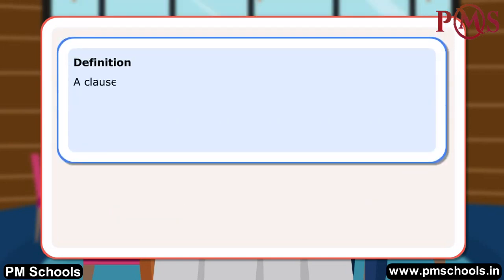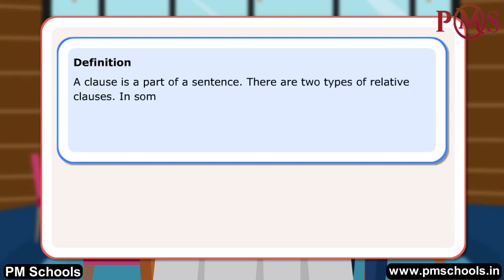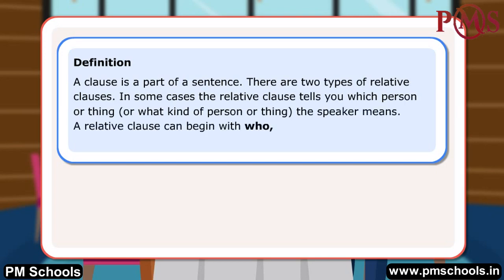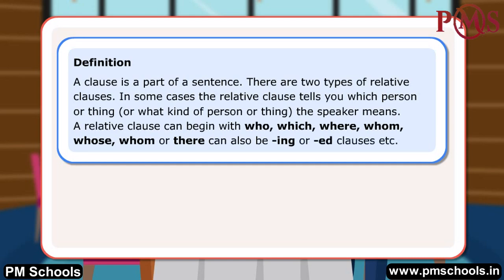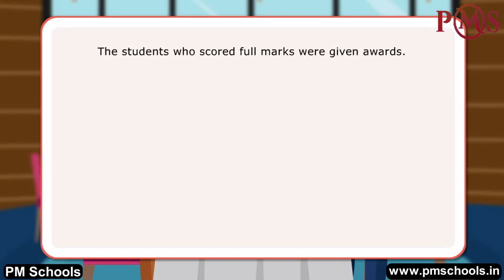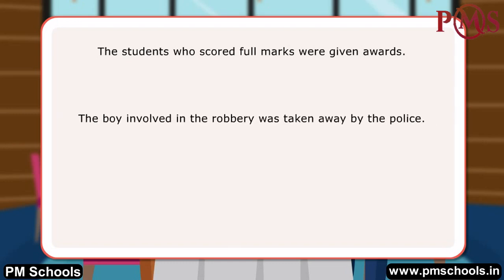Definition: A clause is a part of a sentence. There are two types of relative clauses. In some cases, the relative clause tells you which person or thing, or what kind of person or thing the speaker means. A relative clause can begin with who, which, where, whom, whose, or there can also be ING or ED clauses. For example: 'The students who scored full marks were given awards.' 'The boy involved in the robbery was taken away by the police.'